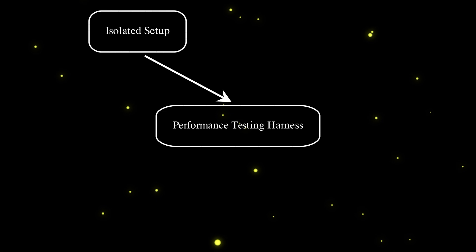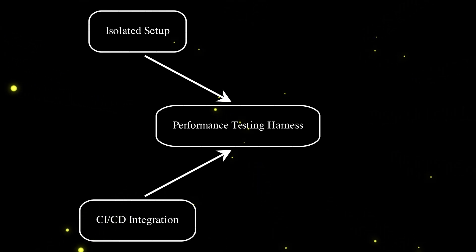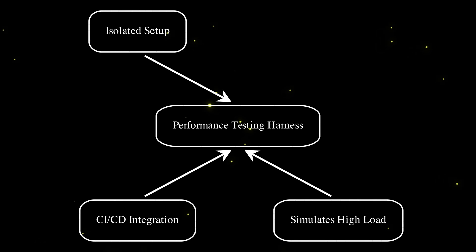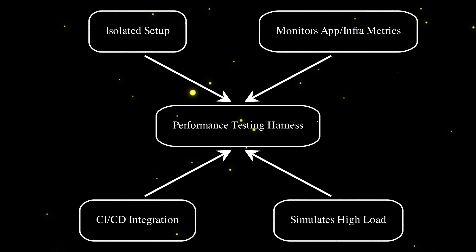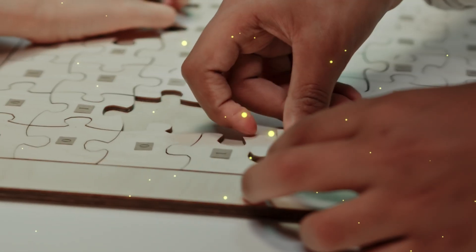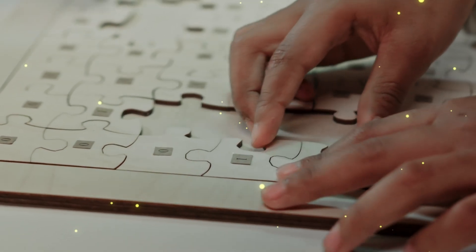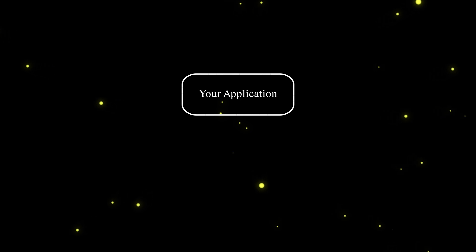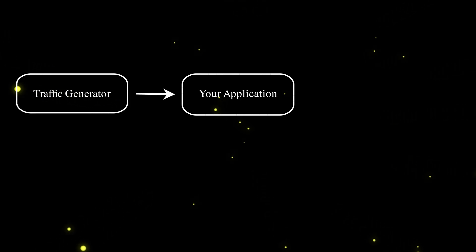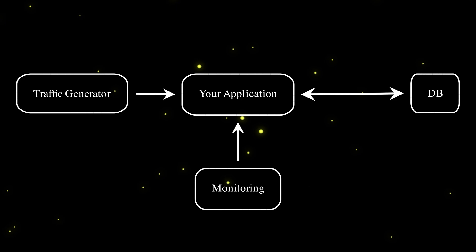A performance testing harness is basically an isolated setup that can be executed manually or integrated into a CICD pipeline. It simulates a high load similar to production-grade traffic and monitors the behavior of your app in terms of resource consumption to spot any memory leaks or other performance issues. For this project, you're going to build this setup by combining and configuring different tools which already exist for this purpose. The architecture is quite simple: you have your app running in a cloud-based environment, a tool which sends a huge number of requests to your app, and a monitoring component which observes resource usage — CPU, memory, maybe the number of connections to a database, and other performance-related metrics.